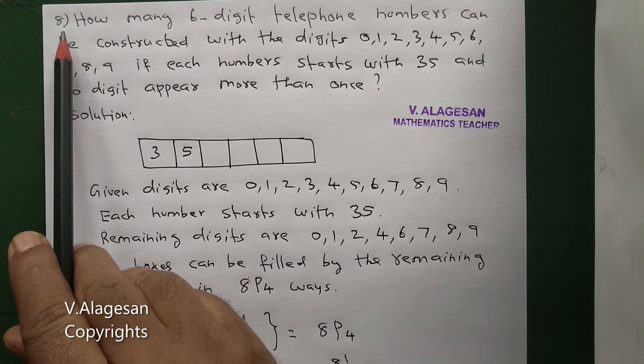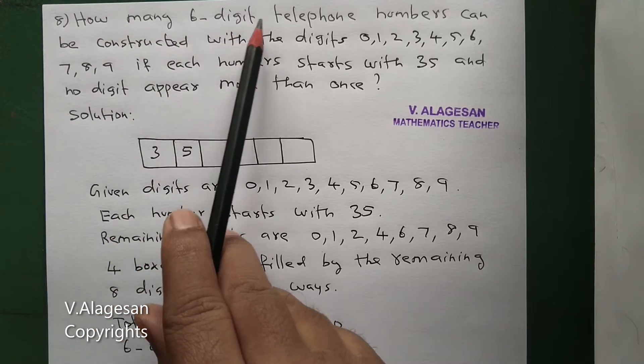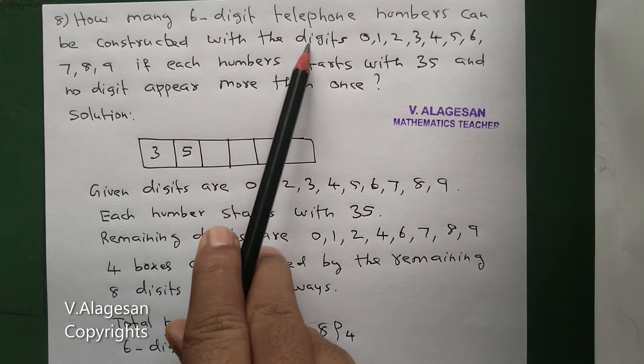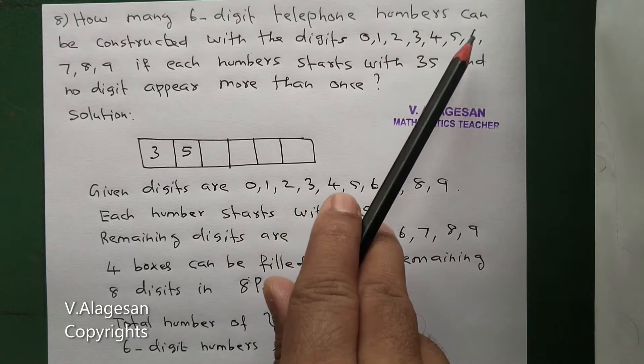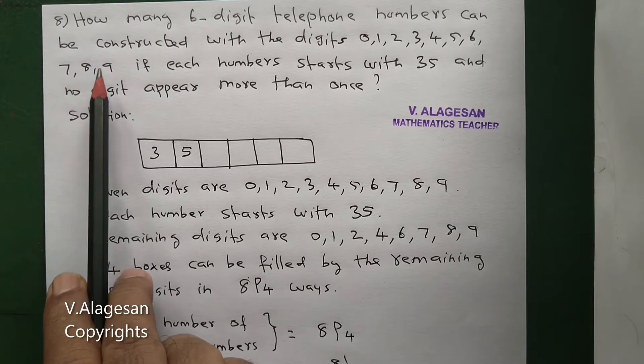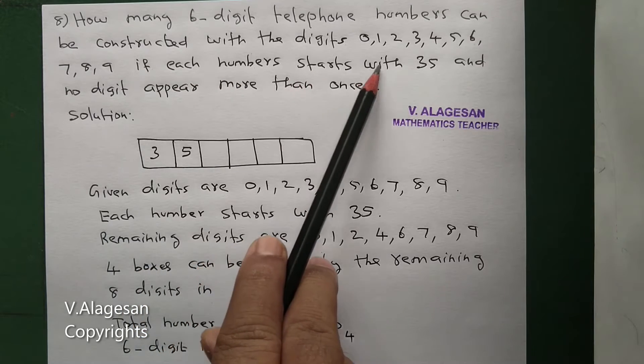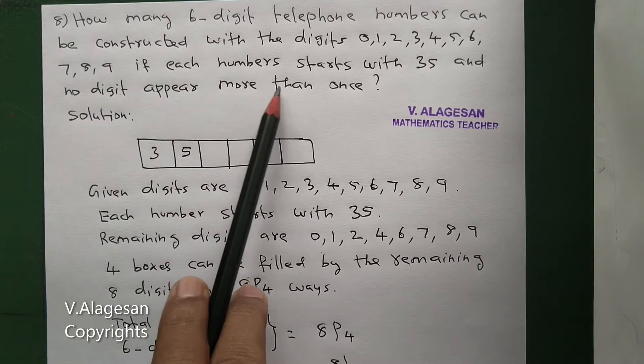Hi students, see question number 8. How many 6-digit telephone numbers can be constructed with the digits 0, 1, 2, 3, 4, 5, 6, 7, 8, 9, if each number starts with 35 and no digit appears more than once?